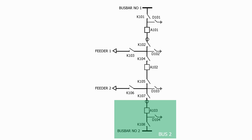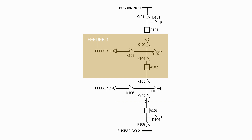What about the protection zone for feeder 1? Well, we know we need to overlap with the busbar number 1 protection zone, so let's place a current transformer here. There are two possible paths for the current to flow into the feeder, therefore we need a second current transformer to complete the protection zone, so let's place a current transformer here.